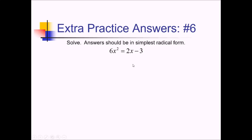To solve this quadratic equation, since I have a linear term, whatever I do is going to require me to move everything over to one side and get it in standard form. So I'm going to rewrite this as 6x squared minus 2x plus 3 equals 0, moving the 2x and the 3 to be over with the 6x squared. At this point, I have a choice between trying to factor this and using the quadratic formula. Quadratic formula always works, so I'm going to go to that: negative b plus or minus the square root of b squared minus 4ac, all over 2a.